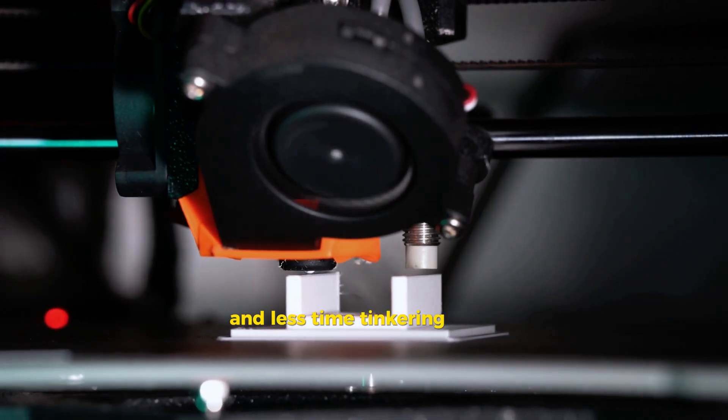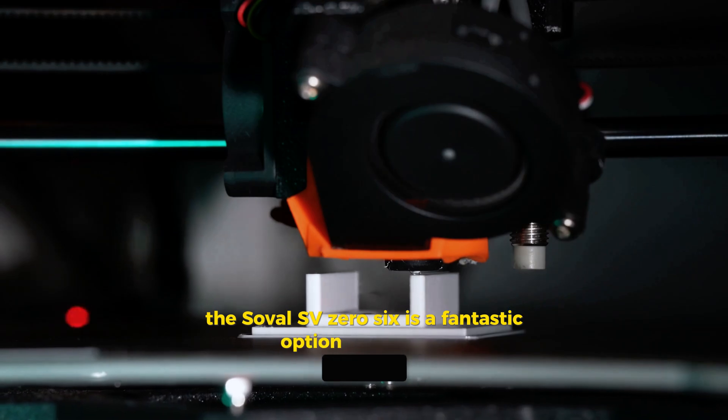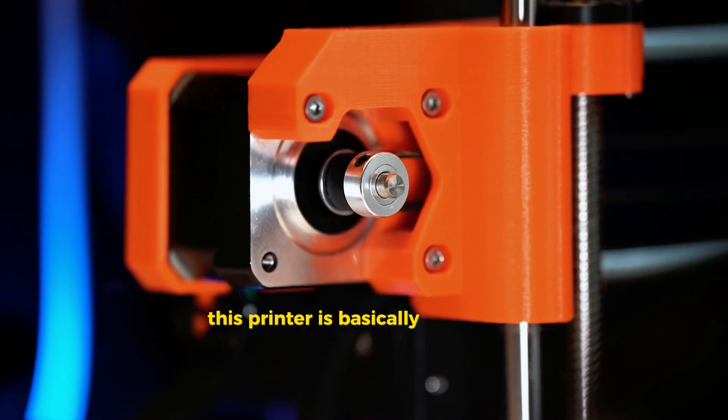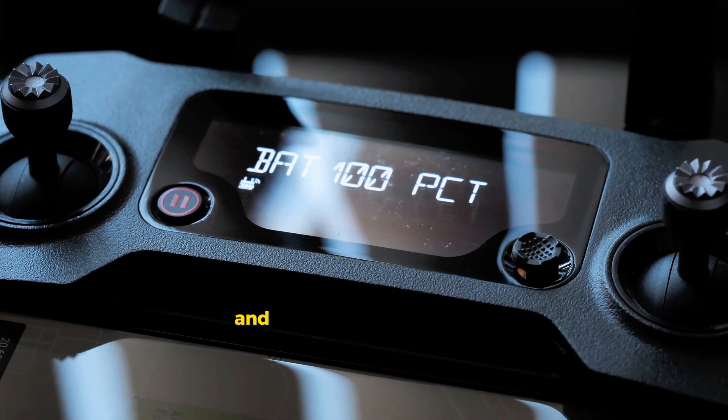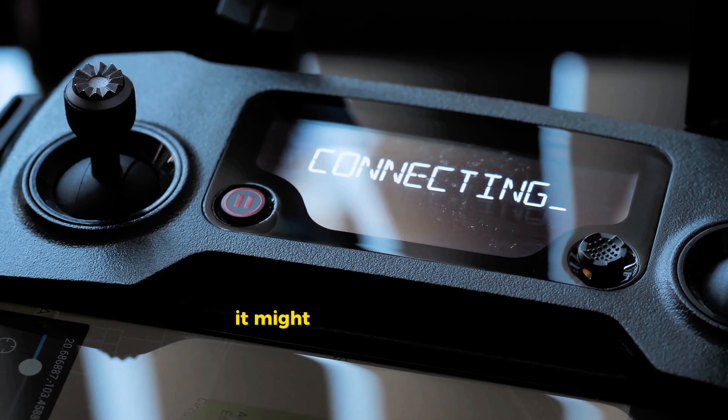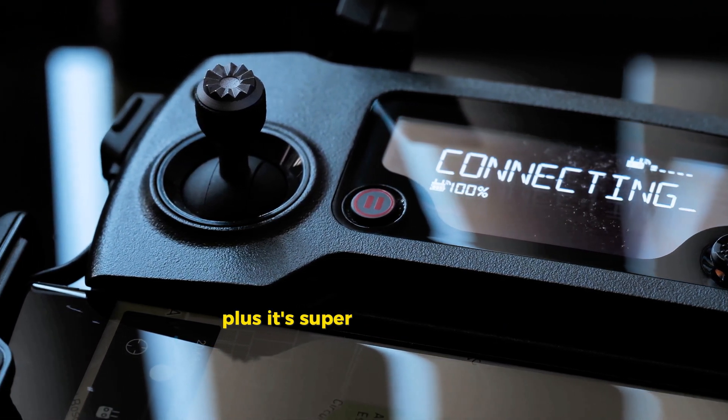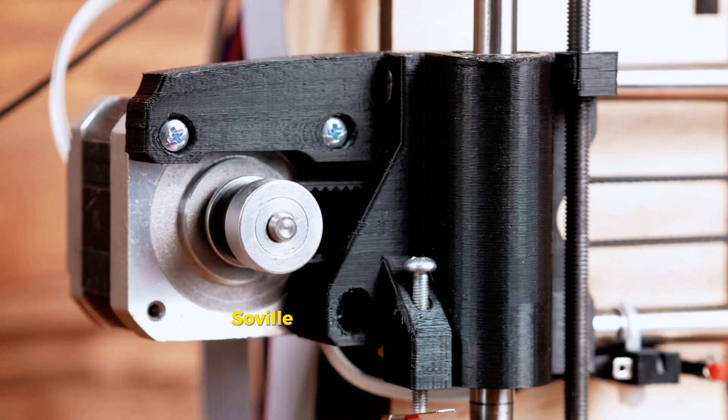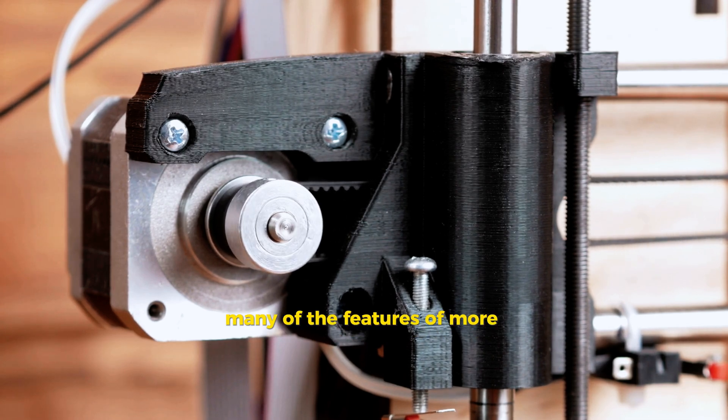For those of you on a tighter budget, the Sovel SV06 is a fantastic option under $300. This printer is basically a clone of the popular Prusa i3 series, but at a fraction of the cost, around $209. It features auto calibration routines that take care of bed leveling and a dual driven Z-axis for stability. It might struggle a bit with flexible materials, but it's excellent with rigid high temperature filaments. Plus it's super quiet, making it perfect for home use. The Sovel SV06 is a great choice for anyone who wants a high quality printer without breaking the bank.